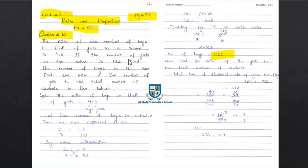First, we were asked to find the number of boys, and we found it to be 216. If there are 162 girls, then there are 216 boys in the school — boys had a higher ratio. Now, for the second part, total number of students = number of girls + number of boys = 162 + 216 = 378.